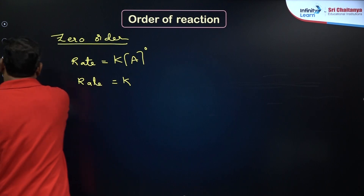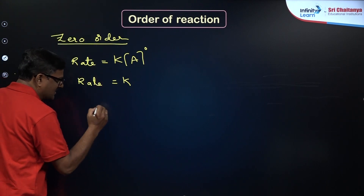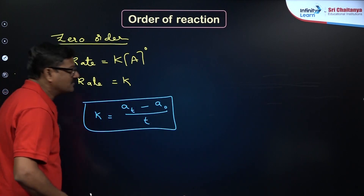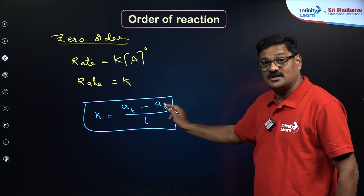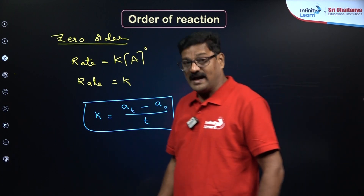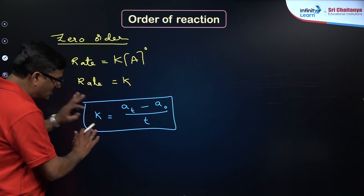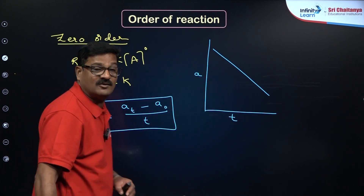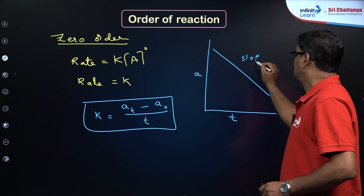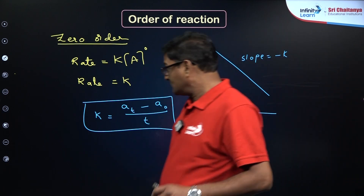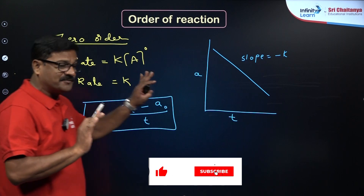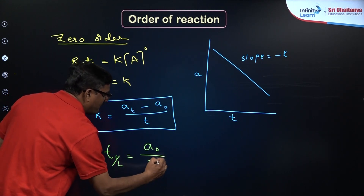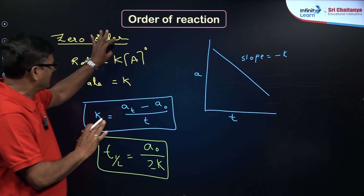The integrated rate law for zero order reaction is: k = ([A]₀ - [A]t) / t, where [A]₀ is the initial concentration of the reactant and [A]t is the concentration of A at time t. The graph of concentration of A versus time t is a straight line with a negative slope, and the slope equals −k. The half-life for zero order reaction is t½ = [A]₀ / 2k.